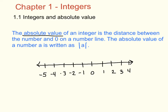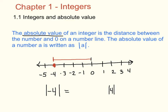The absolute value of a number A is written as |A|. So you would read this as the absolute value of A. I have drawn a number line here, and what we are going to do is figure out what the absolute value of negative 4 is and the absolute value of 4. The absolute value of negative 4 means the distance from negative 4 to 0, which is 4 units. Therefore, the absolute value of negative 4 is 4.